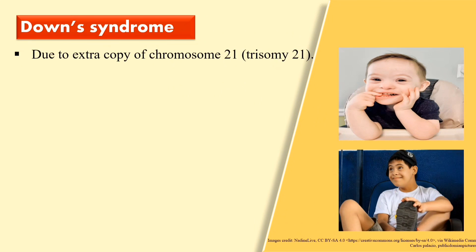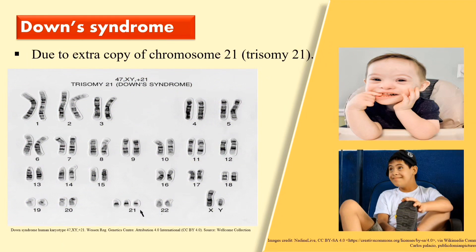First, Down syndrome. This syndrome is due to the presence of an extra copy of the 21st chromosome, so simply due to trisomy 21. If you see the karyotype of a Down syndrome patient, you will see that the 21st chromosome is present in triplicate. Usually we have a pair of each chromosome, but in Down syndrome the 21st chromosome has three copies.